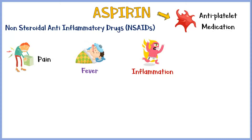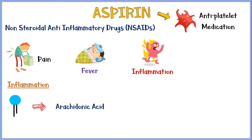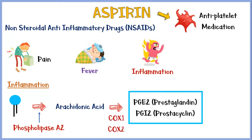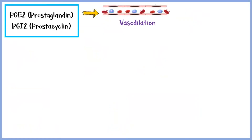First, we will discuss some important events occurring in inflammation. Whenever there is inflammation, membrane phospholipids are taken up and converted into arachidonic acid by an enzyme called phospholipase. This arachidonic acid is then converted to prostaglandins and prostacyclins by the enzymes cyclooxygenase 1 and 2. Once released, these substances cause vasodilation and increase blood flow to the affected area.